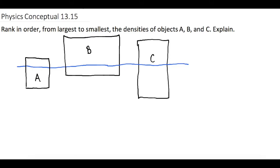Rank in order from largest to smallest the densities of objects A, B, and C, and explain. Looking at these objects, what we want is the ratio of the overall volume to how much volume is actually submerged. So before we talk about these three, let's just talk about the concept in general.